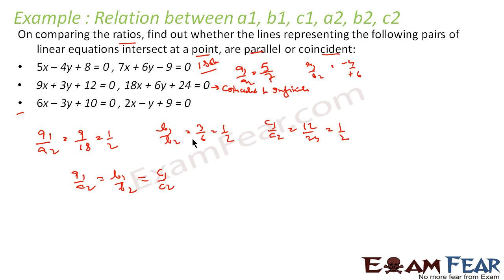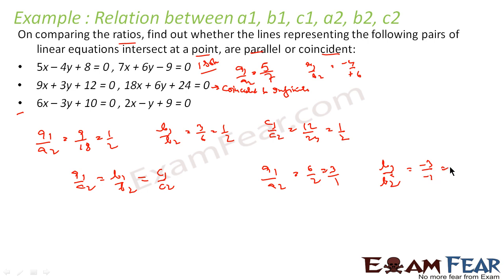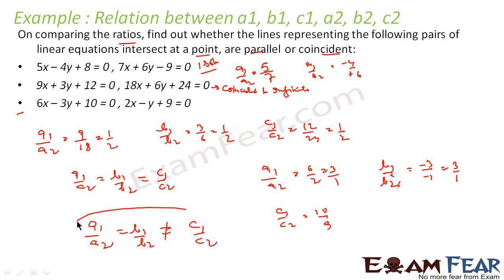Let us take one more example: 6x - 3y + 10 = 0 and 2x - y + 9 = 0. Here a1/a2 is 6/2 = 3/1, and b1/b2 is -3/-1 = 3/1. But c1/c2 is 10/9. So a1/a2 equals b1/b2, which is 3/1, but it is not equal to c1/c2. Since a1/a2 = b1/b2 but not equal to c1/c2, this is no solution — that is, they are parallel lines.